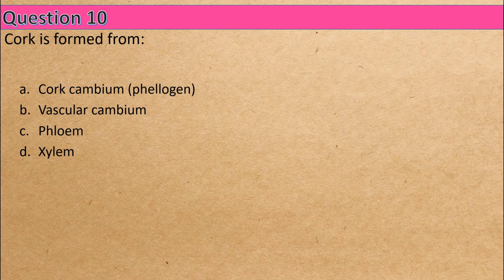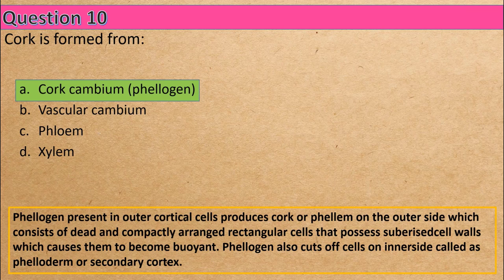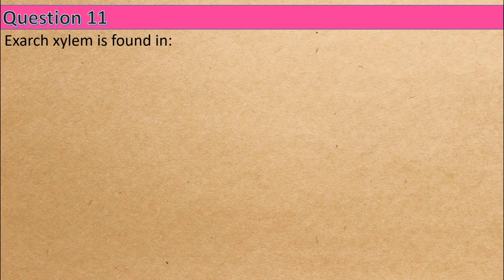Question 10: Cork is formed from — Option A: cork cambium (phellogen), Option B: vascular cambium, Option C: phloem, Option D: xylem. The correct answer is Option A: cork cambium (phellogen). Question 11: Protoxylem is found in — Option A: root, Option B: stem, Option C: leaf, Option D: rachis. The correct answer is Option A: root.